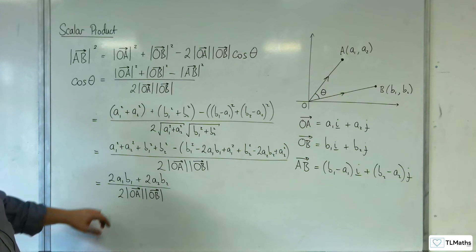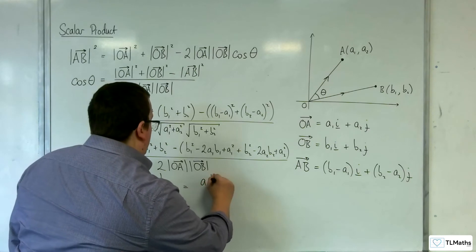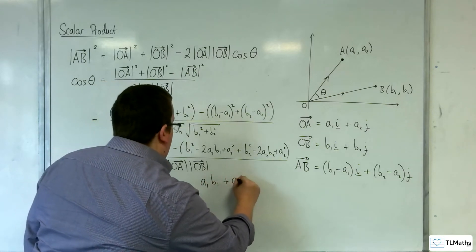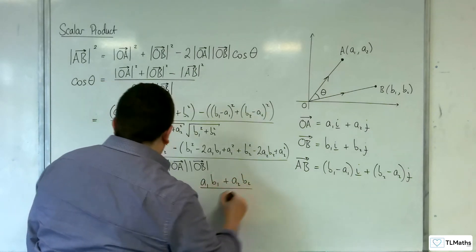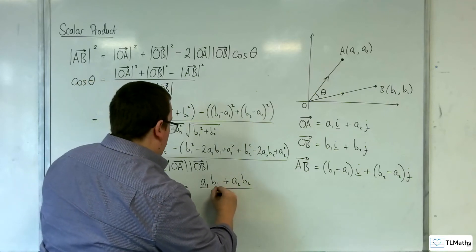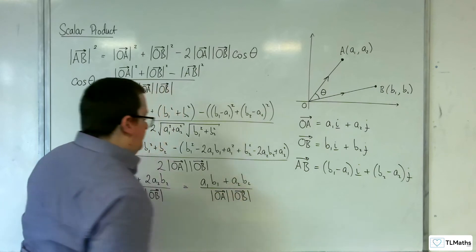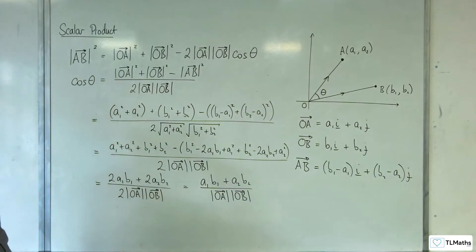So you can see that I can divide top and bottom by 2. So I get A1B1 plus A2B2 over the length of OA times the length of OB.